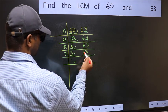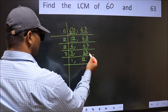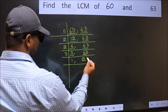First number 6. When do we get 6 in the 3 table? 3 twice 6. The other number 3. When do we get 3 in the 3 table? 3 once 3.